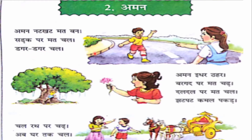So here we see Aman, and his sister is telling him: Aman, nut cut mat bun — Aman, don't be naughty. Nut cut means naughty. Chadak par mat chal — chadak means road, mat means don't, chal means walk. So don't walk on the road. She is telling him. Dagar dagar chal — dagar means side. Walk on the side of the road.